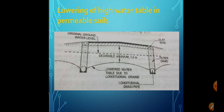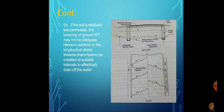If the soil is relatively less permeable, lowering of the groundwater level may not be adequate under the center of the pavement or between two longitudinal drain trenches. Hence, in addition to the longitudinal drain trenches, transverse drainage has to be installed at suitable intervals to effectively drain off the water and lower the water table. The transverse drain consists of perforated pipes through which water can easily enter.